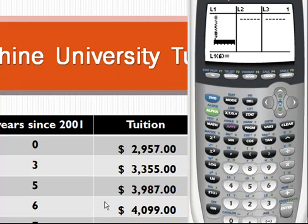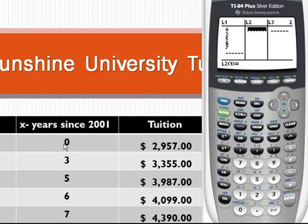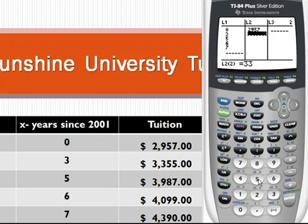Your L1 should look something like this. Press the right arrow key, and now enter your output. So corresponding to year 2001, or X-years equals zero since 2001, I'm going to enter 2,957, and press enter. Next we have 3,355, and so forth. You can press the pause key toward the bottom of your screen if you need more time to enter the data.